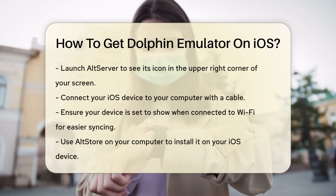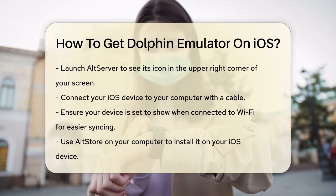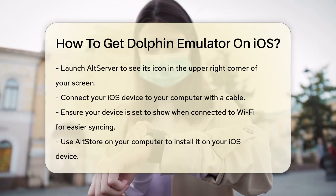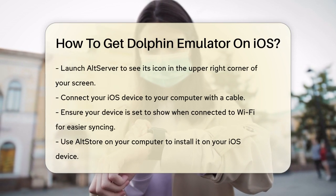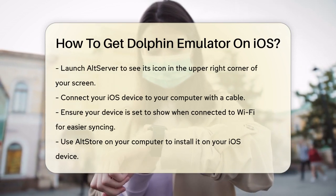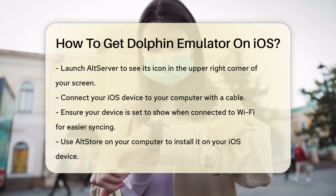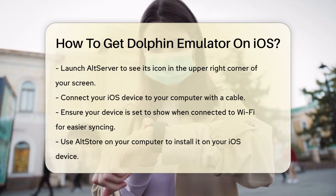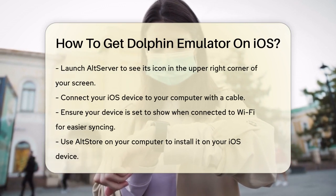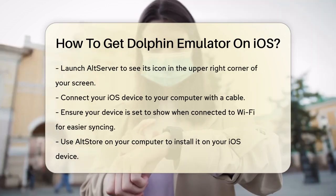Next, connect your iOS device to your computer via a wire. In your Finder window, your device should appear on the left side. Make sure to check the box that says 'Show this device when connected to Wi-Fi' to avoid needing a wire each time you sync.